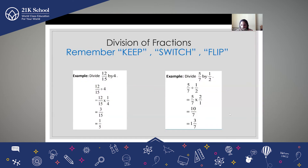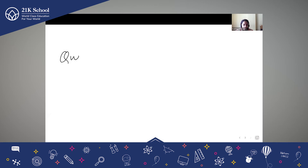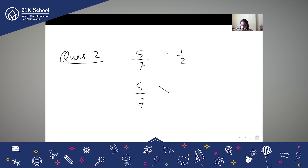I would like to discuss one more question. Our second question is 5/7 divided by 1/2. We have to divide 5/7 by 1/2. Let's do that also. 5/7 divided by 1/2. So as per our rule — Keep, Switch, Flip.